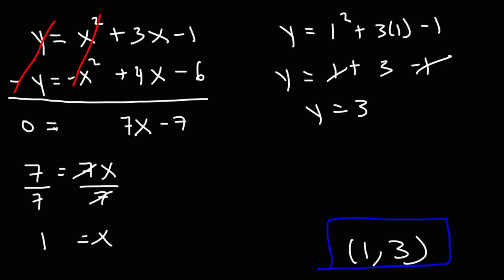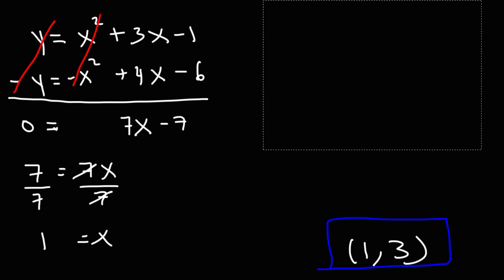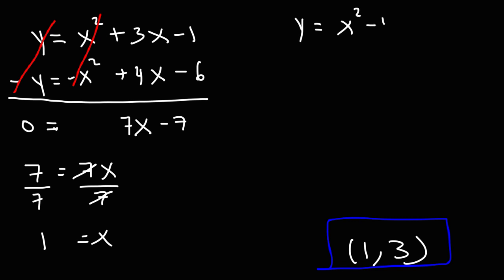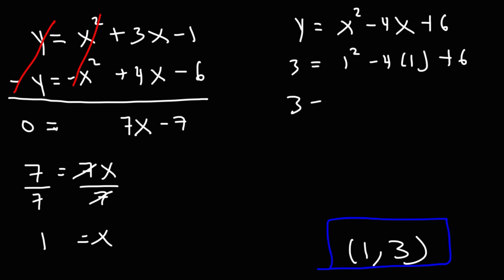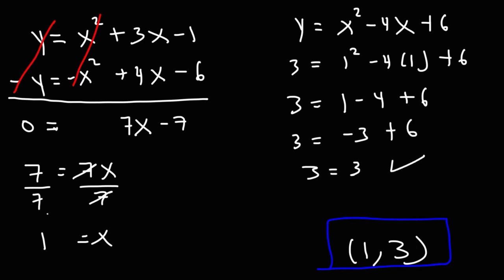Since we got this answer from the first equation, we know it works for it. Let's test it in the second equation in its original form: y equals x squared minus 4x plus 6. Replacing y with 3 and x with 1: 1 minus 4 plus 6. 1 minus 4 is negative 3, and negative 3 plus 6 is 3. So this solution satisfies both equations.